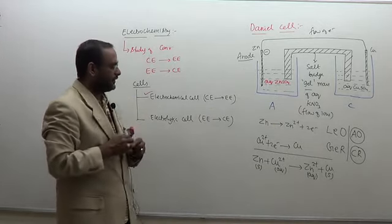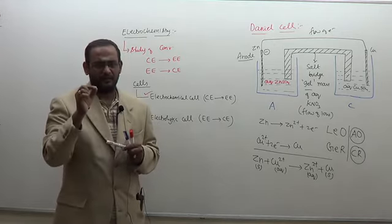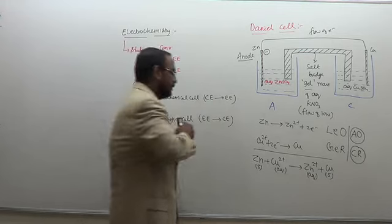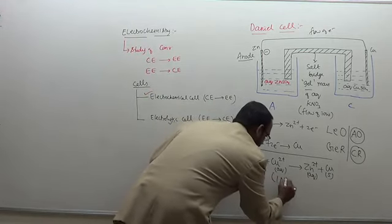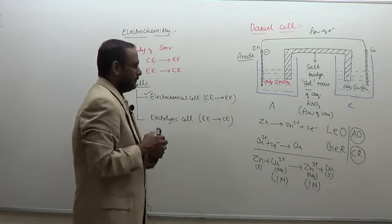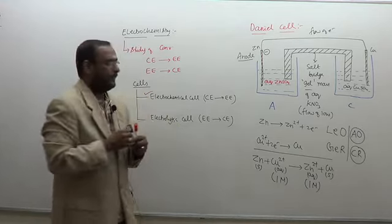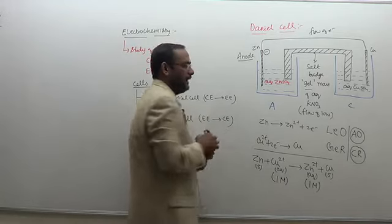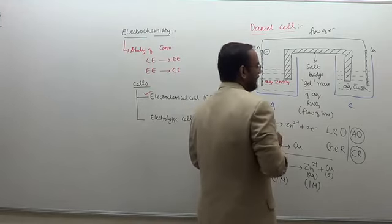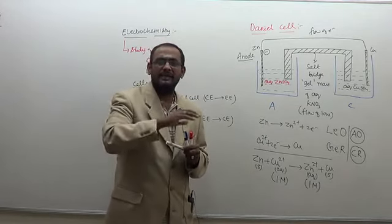In this overall reaction, the concentration of the salts in the aqueous system is taken to be 1 molarity. During the course of the reaction, a potential difference is developed between the two electrodes — zinc and copper — because of this chemical reaction. Due to this potential difference, there is a flow of electrons from zinc to copper.